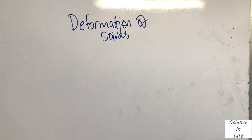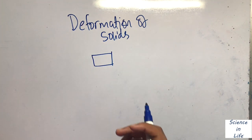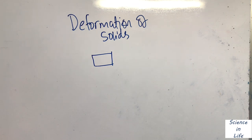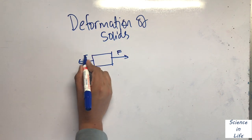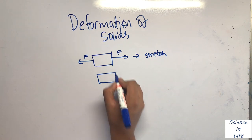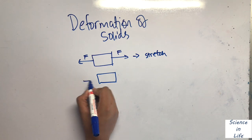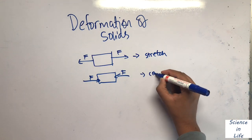Let's move on to deformation of solids, which combines the principles of mechanics with materials. Deformation of an object is caused by a force. There are two main types: tensile forces, which are pairs of forces acting against each other causing the object to stretch, and compressive forces, where the two forces act towards each other causing the object to compress.